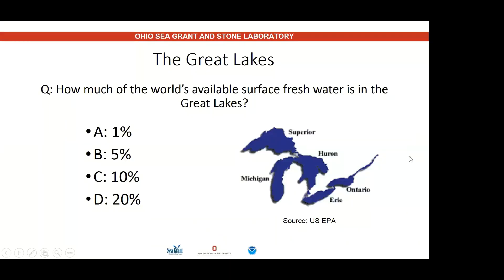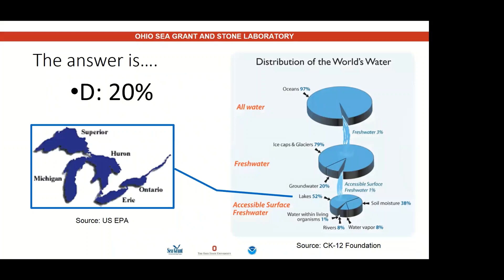Let's start with the Great Lakes. Lake Erie is one of five Great Lakes, the others being Lake Superior, Lake Huron, Lake Michigan, and Lake Ontario. Who can guess how much of the world's available surface freshwater is in the Great Lakes? The answer: 20%. Together, these lakes make up about 20% of the world's available surface freshwater, and Lake Erie alone provides drinking water for over 11 million people.